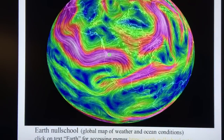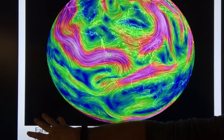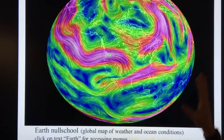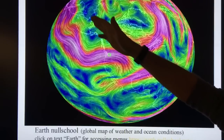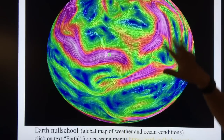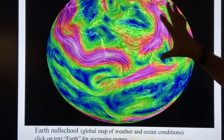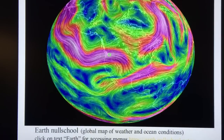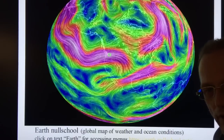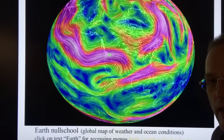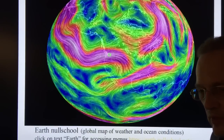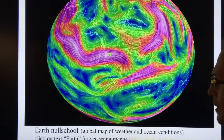Earth Null School — Google this — gives you a global map of weather and ocean conditions. You click on 'Earth' in the bottom left, get the menus, and can look at whatever you want. In this case, it's showing jet stream behavior: very convoluted, with lots of ripples and loops — very unusual behavior. So I'm going to stop here. This is part one — please go to part two to continue. Thank you.